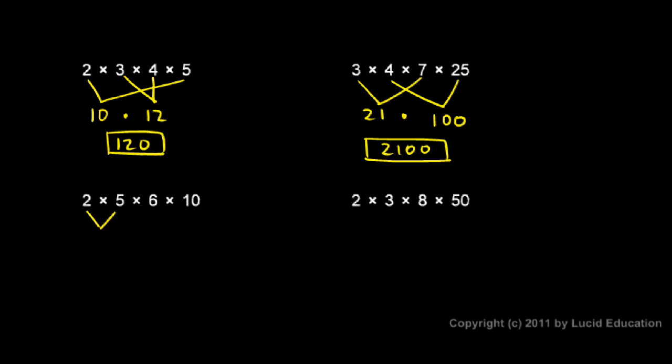Down here, the 5 and the 2 multiply to give me 10. And so I have 10 times 6 times 10, and I could do that in my head. 10 times 6 is 60, and then multiplying that by 10 gives me 600.